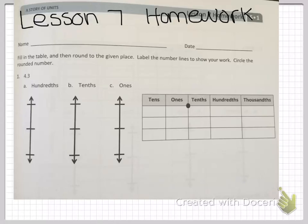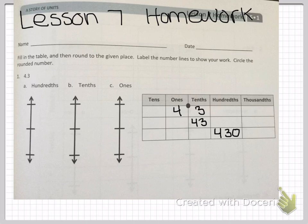We're going to go over the homework for lesson seven. In this problem, you are rounding 4 and 3 tenths to the hundredths, tenths, and ones. I've already put in 4 ones and 3 tenths on your place value chart. Now I'm putting 43 tenths, and lastly 430 hundredths. 430 hundredths goes to the bottom of your vertical number line — it's the same as saying 4.3. At the top is 440 hundredths, which equals 4.4.